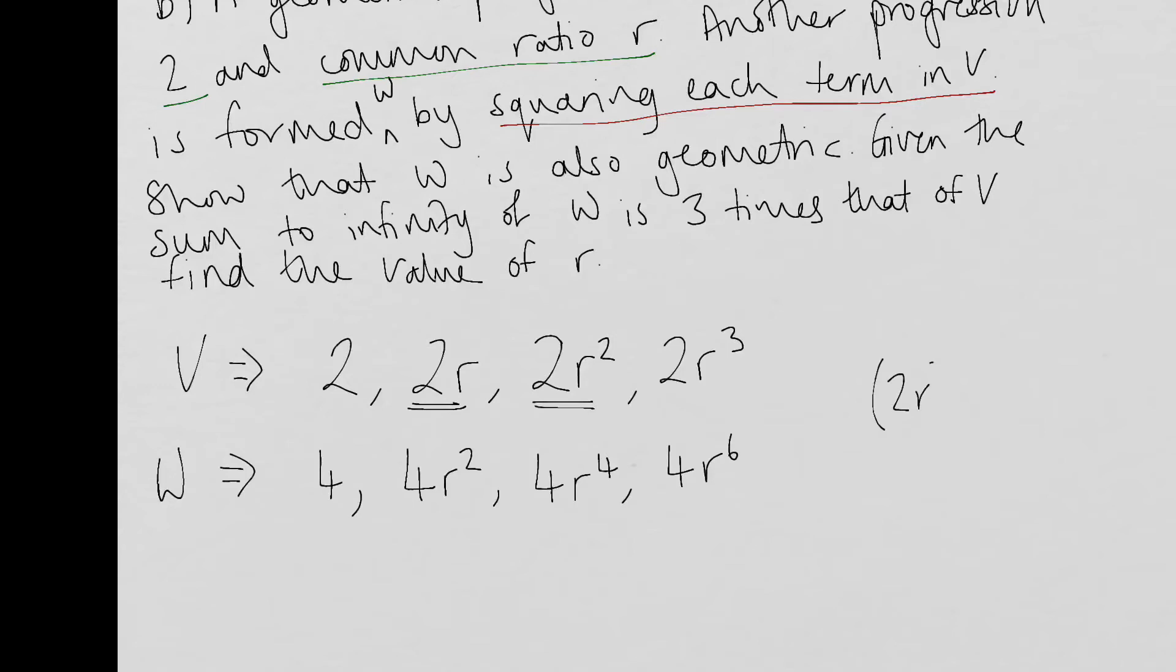OK, so remembering our rules for indices, you know, if we're squaring it, it's in a set of brackets. So the two gets squared, which is where I get the four from. And then these two powers get multiplied together, which is why I've got a power of six there and not a power of five. I'm not adding those indices. All right, then. So that is my second sentence dealt with now.